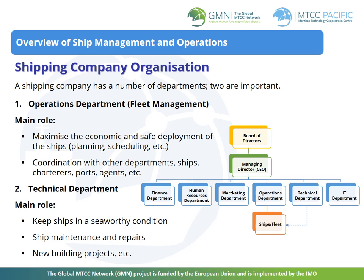The structure of a shipping company is determined primarily by the nature of the trade in which it operates and by the size of activities. For example, a tramp operator will generally be different from that of a much larger liner company. Irrespective of the size of the company, its structure should be designed to permit good and fast decision making. An example of the typical departments in a shipping company is shown in the diagram on the slide.